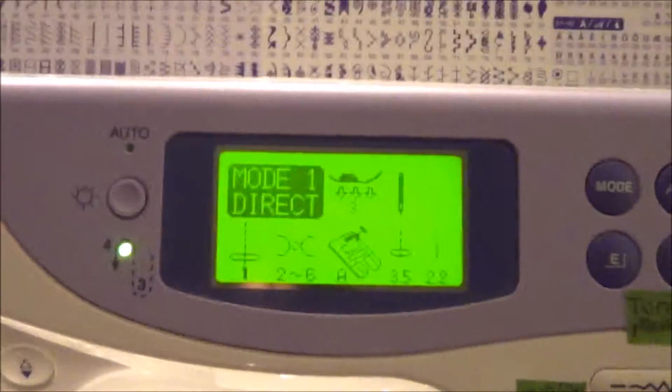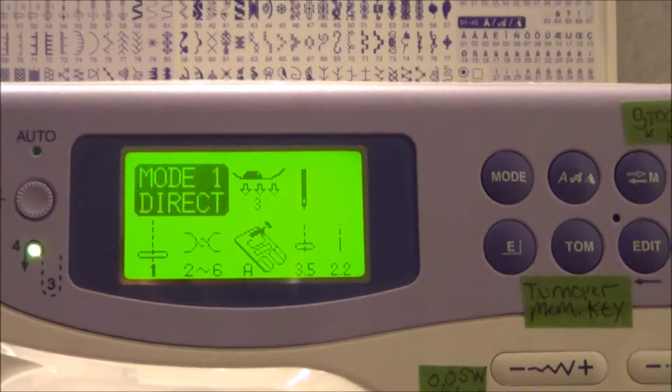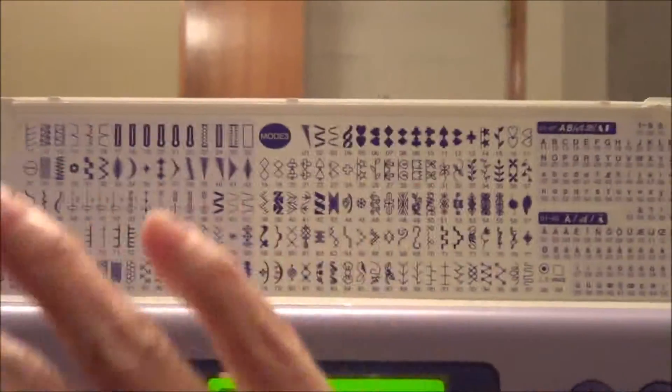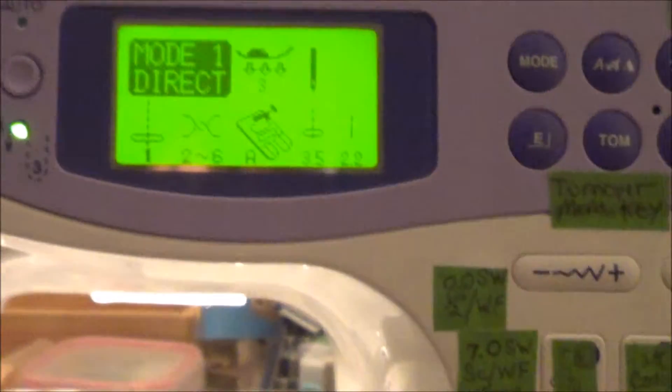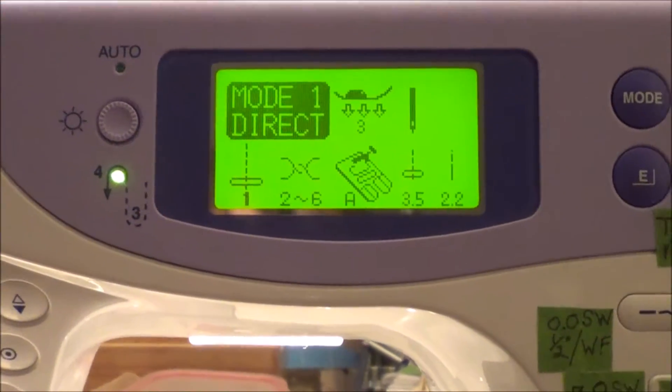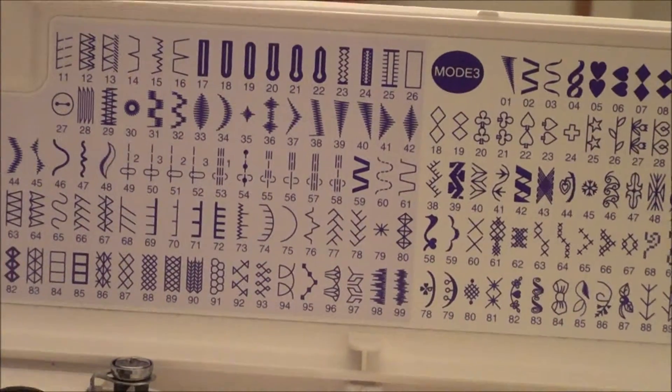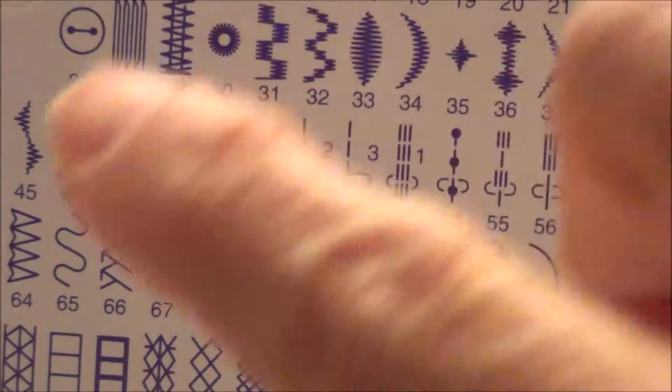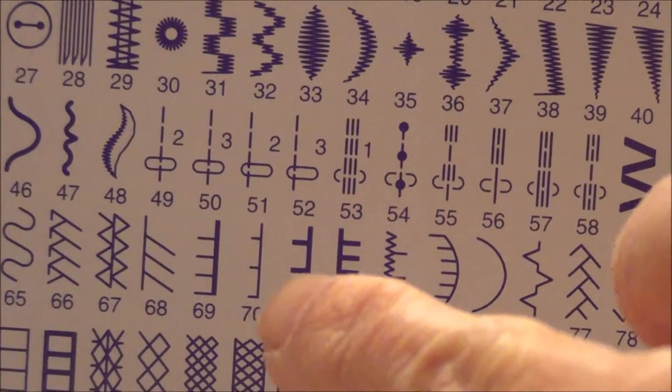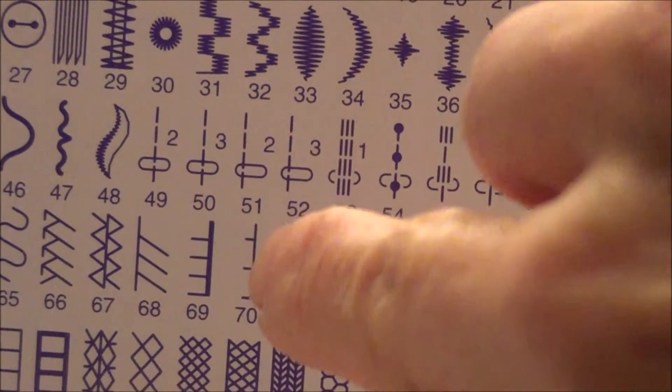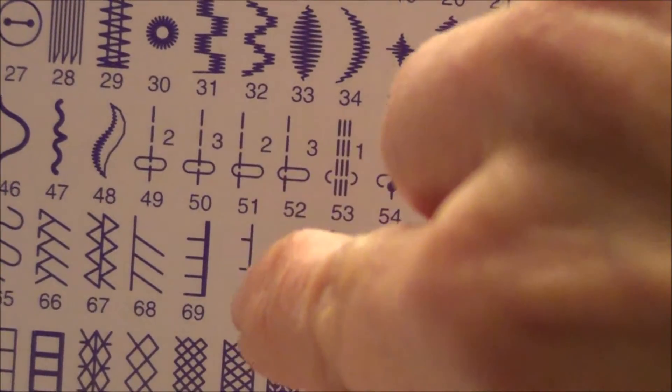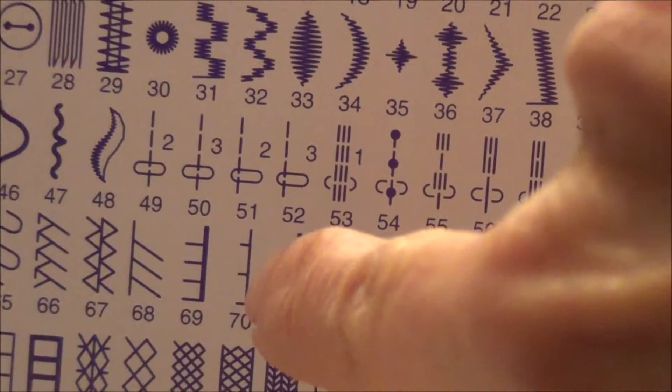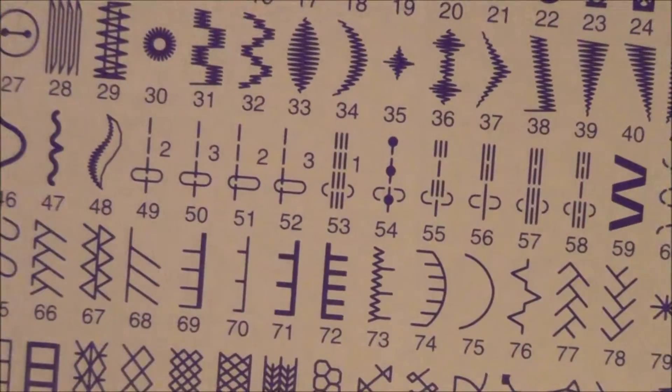So I have a Janome MC4900 and it has a lot of stitches and a lot of ways to program things and so on. Now the blanket stitch that we want to do is in the wrong direction. So we want the straight line to be on the left side and the jump over to be going to the right.